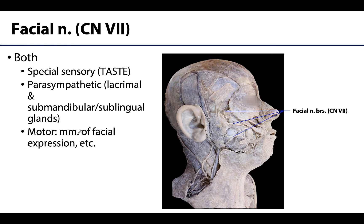The facial nerve, cranial nerve VII, has both sensory and motor fibers and is one of the first complex nerves with many different functions. Sensory fibers include special sensory — taste to the anterior or presulcal portions of the tongue. Somatic motor fibers innervate the muscles of facial expression and surrounding muscles. The visceral motor or preganglionic parasympathetic fibers are destined for the pterygopalatine and submandibular ganglia, initiating secretion from the lacrimal gland and the submandibular and sublingual salivary glands.